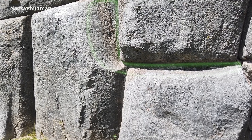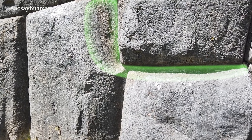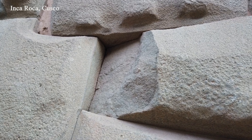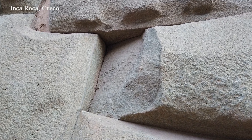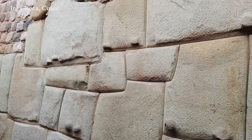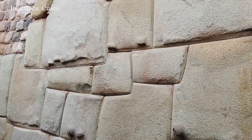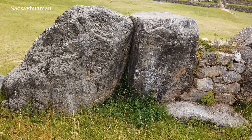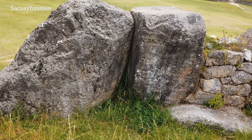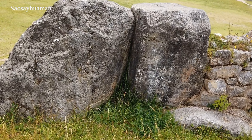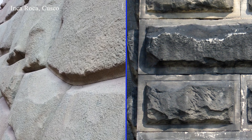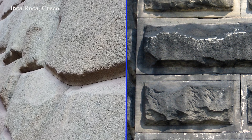Chamfers reduce labor costs while bevels do not — and may even increase them. They do not reinforce the edges of the block. In general, bevels cannot be used to maintain the alignment of a masonry course. Additionally, chamfers and bevels differ in shape, and it should be noted that bevels were also made on the backsides of blocks, whereas chamfers were not. It is evident that a bevel and a chamfer are fundamentally different elements with distinct purposes and creation processes.